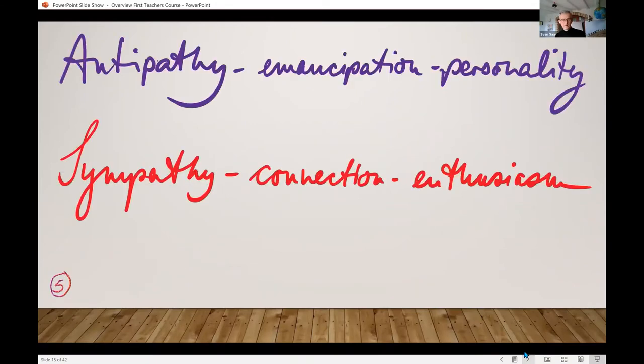In lecture five, Steiner reminds us that sympathy and antipathy are not the same as positive and negative. We tend to think of them that way. We are antipathetic towards somebody we don't like. Sympathetic to something that is attractive to us.